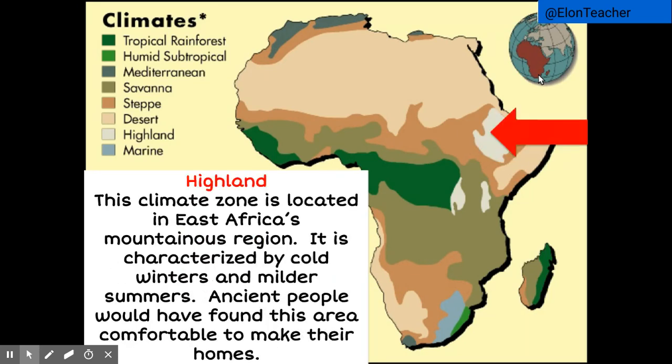Last but not least is the highland climate. This climate zone is located in East Africa's mountainous region. It is characterized by cold winters and milder summers. Ancient people would have found this area comfortable to make their homes.